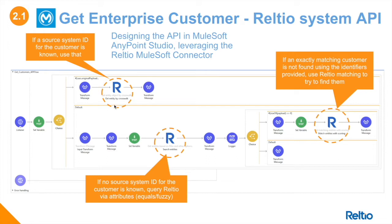We have 'get entity by crosswalk', where we're able to leverage any customer source system specific ID. Alternatively, if we don't have an ID from a source system, we're going to use other available data attributes to query Raltio for this customer. And if we can't find the customer at that point, we're going to call Raltio's matching API, which can then potentially reveal fuzzy matches where an exact match was not able to be found.